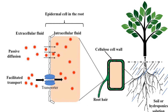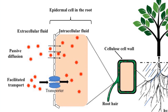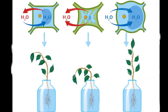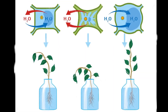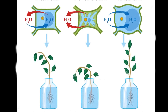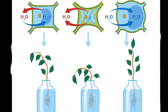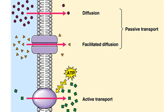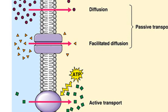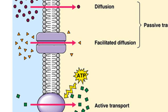Diffusion allows substances to move from an area of high concentration to one of lower concentration, a bit like people spreading out in a park. Osmosis is a special type of diffusion involving water — it is the movement of water molecules across a semi-permeable membrane from a solution with a high concentration to a solution with a lower concentration. Active transport, on the other hand, is the process where plants use energy to move substances against a concentration gradient, kind of like swimming upstream.